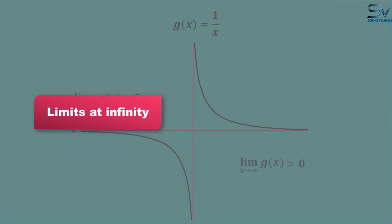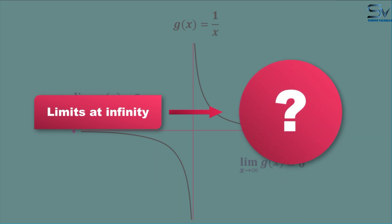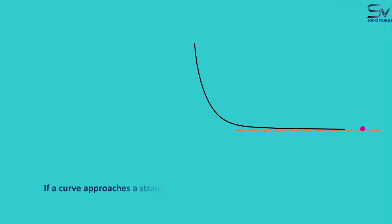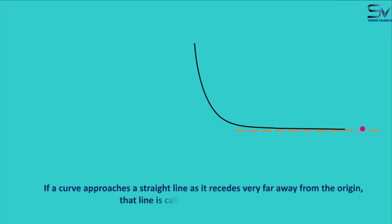Another concept emerges from limits at infinity, which helps us to analyze the graph of the function. Let's understand that with the help of an example. Here I have drawn a black colored curve. We find the limit of this function when x approaches infinity — as x takes on larger values, the function approached 0. If we look at this carefully, we see that it is following a straight line, which we call the asymptote of the curve. This means if a curve approaches a straight line as it recedes very far away from the origin, that line is called an asymptote of the curve. Because here in the graph it is a horizontal line, we will name it the horizontal asymptote of the curve.